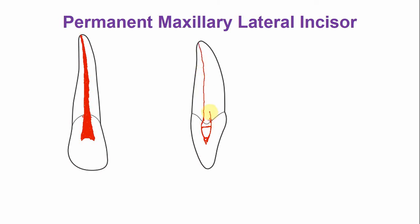In the apical region, the pulp canal either opens labially — as seen in this picture — or it may open at the tip of the root or in a lingual direction.